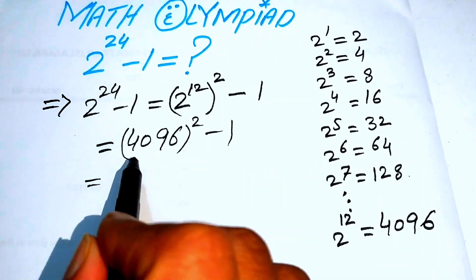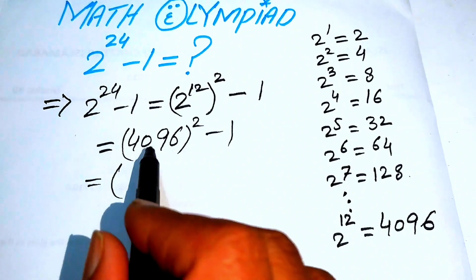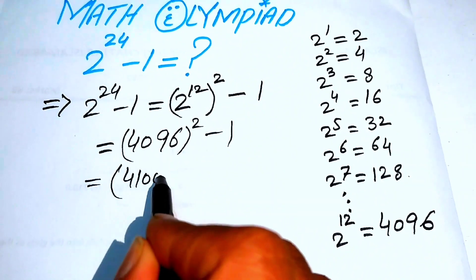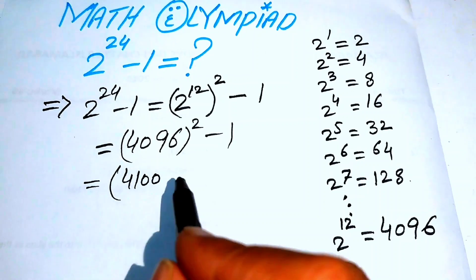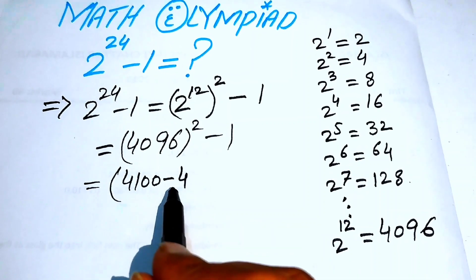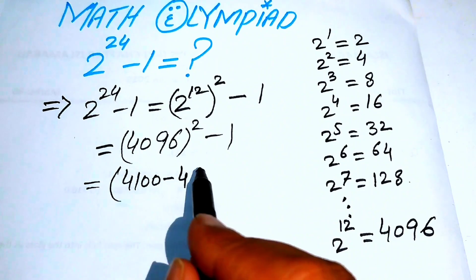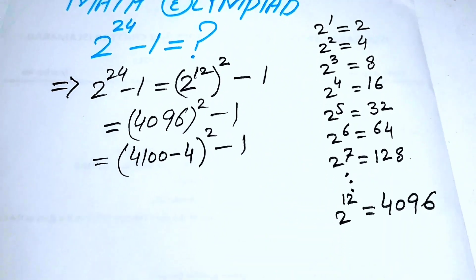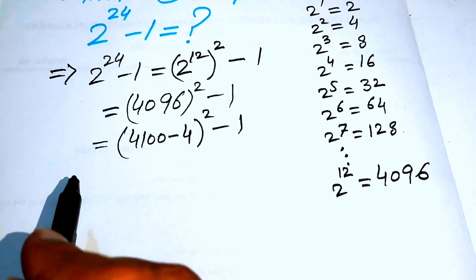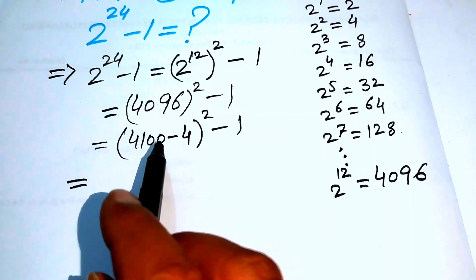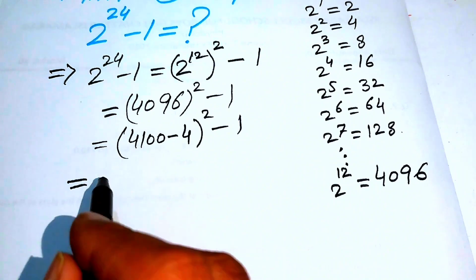Here we again break this value and we write it as 4100 minus 4, because 4100 minus 4 equals 4096, and its whole square minus 1. So here we use a nice algebraic identity: we use the a minus b whole square formula and we can easily get the output of this value.